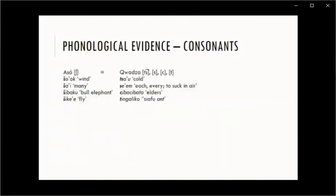For sounds that Asa has but Kwadza does not: Asa SH corresponds to either tse, se, palatal stop, or t in Kwadza, which is explainable because the original sounds could have been merged to SH in Asa but stayed distinct in Kwadza. And Asa J corresponds to D in Kwadza, which means either Kwadza simplified this sound or Asa created a new affricate.